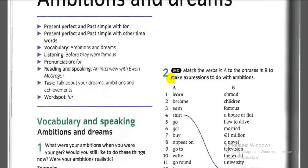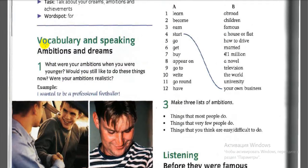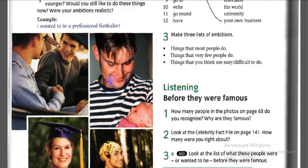Module 7: Ambitions and Dreams — vocabulary and speaking. First exercise: what were your ambitions when you were younger? Pause and answer this question. Next question: would you still like to do these things now? Pause and answer. Were your ambitions realistic? Pause and answer. I hope you've explained your answer and opinion.